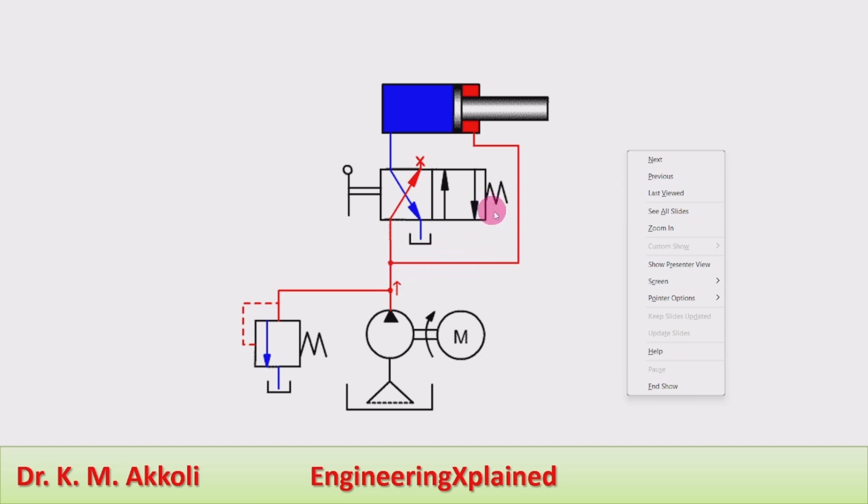The fluid is bypassing the direction control valve and entering the rod end side of the cylinder. And the fluid from the piston end of the cylinder port will be flowing through the direction control valve to the tank.